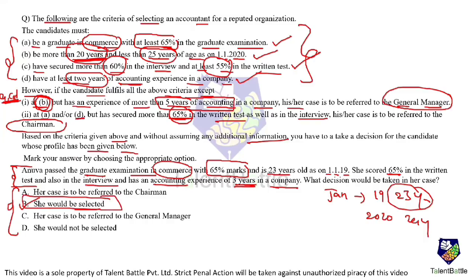If any of the criteria like B, or A and D, are not satisfied, only then do we look into the exception cases. You are not supposed to consider any other information beyond what is given in the question. In this particular case, she cleared all the criteria, so she will be selected. The answer is option B.